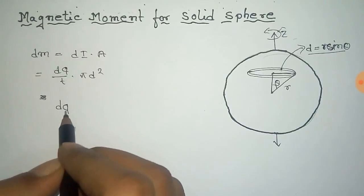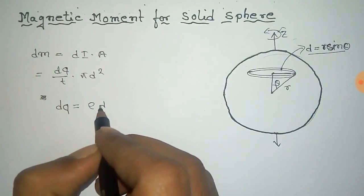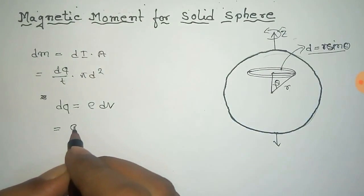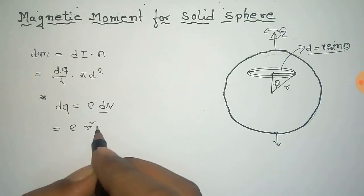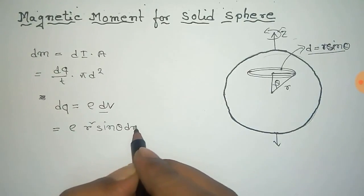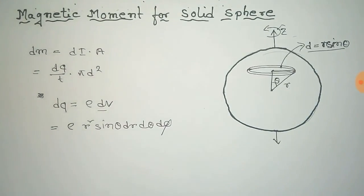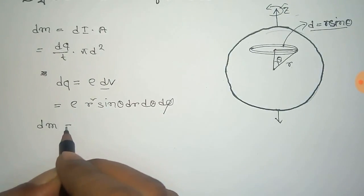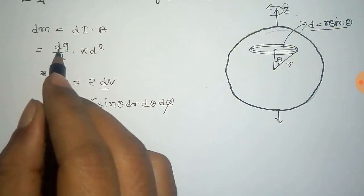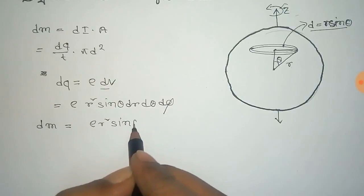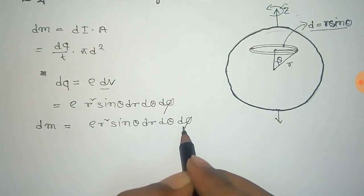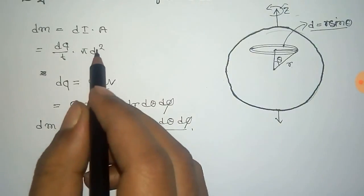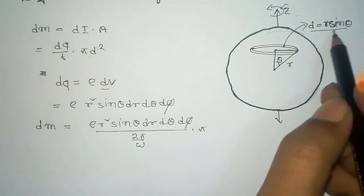Now, dQ is the charge enclosed by this ring. dQ equals rho times dV, where rho is the volume charge density of the sphere. In spherical coordinates, dV equals r squared sine theta dr d theta d phi. Substituting dQ into the expression for dM: dQ by time equals 2 pi by omega, and the area is pi D squared where D equals r sine theta.